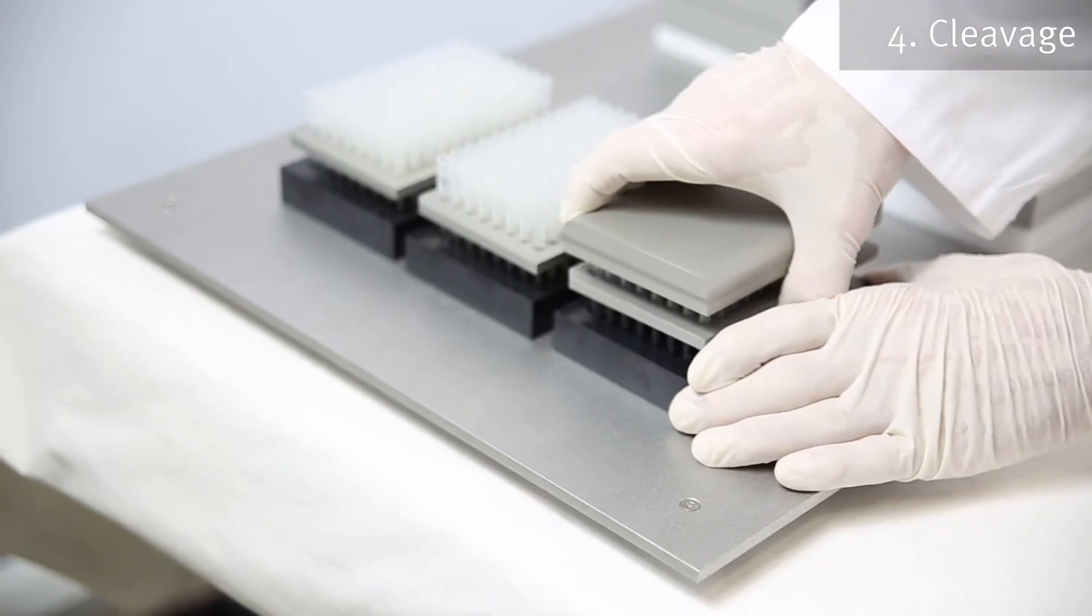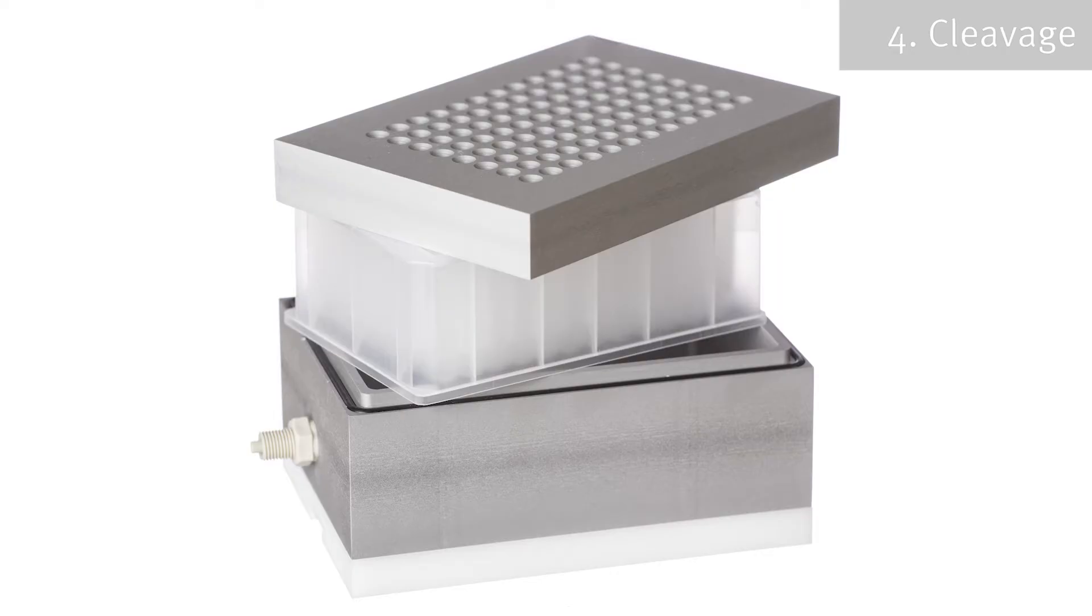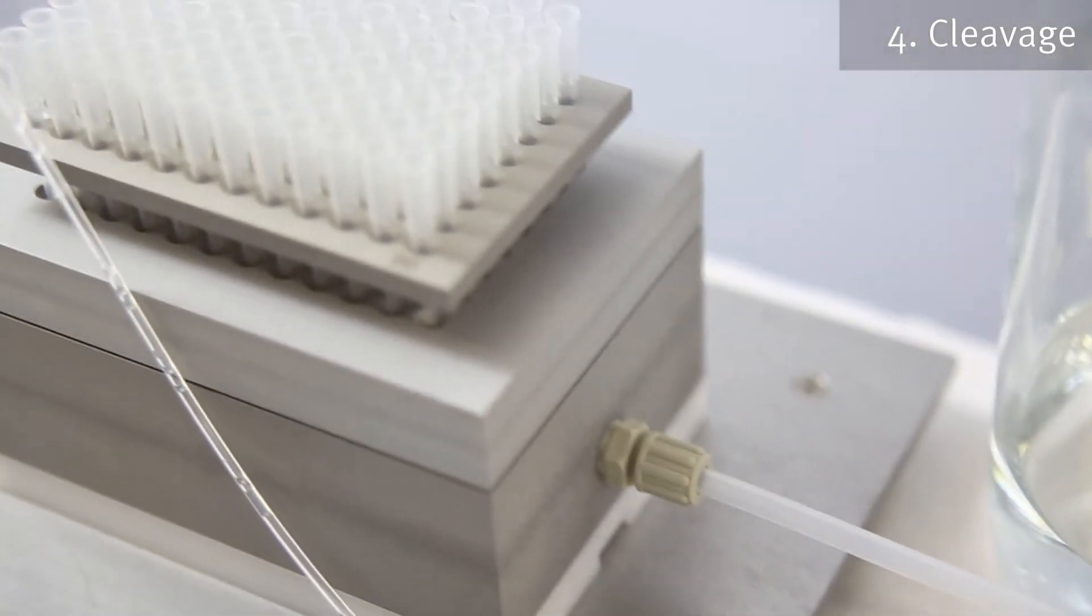After the cleavage step, the reactor rack is moved onto the transfer box which contains the 96 deep well plate. The transfer box is connected to a vacuum source and the tip reactors are emptied into the deep well plate.